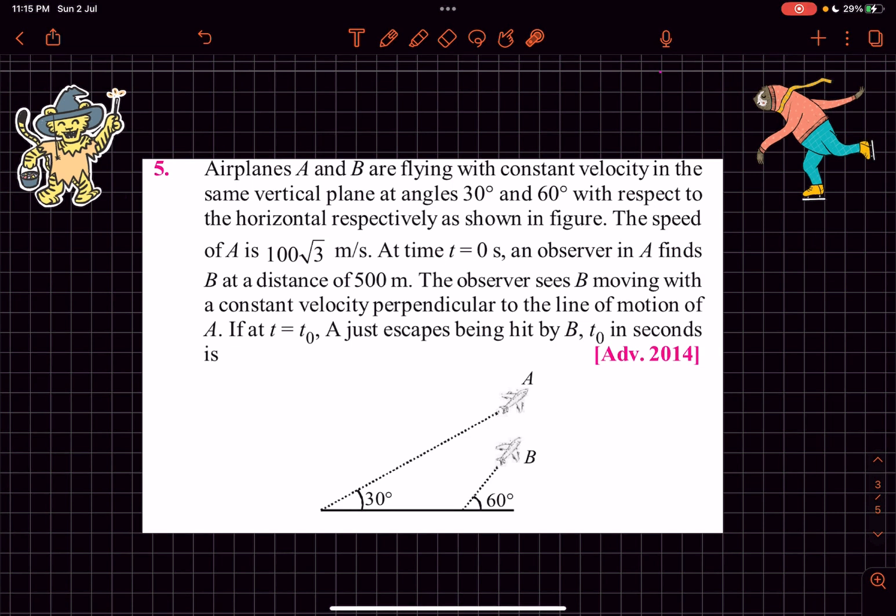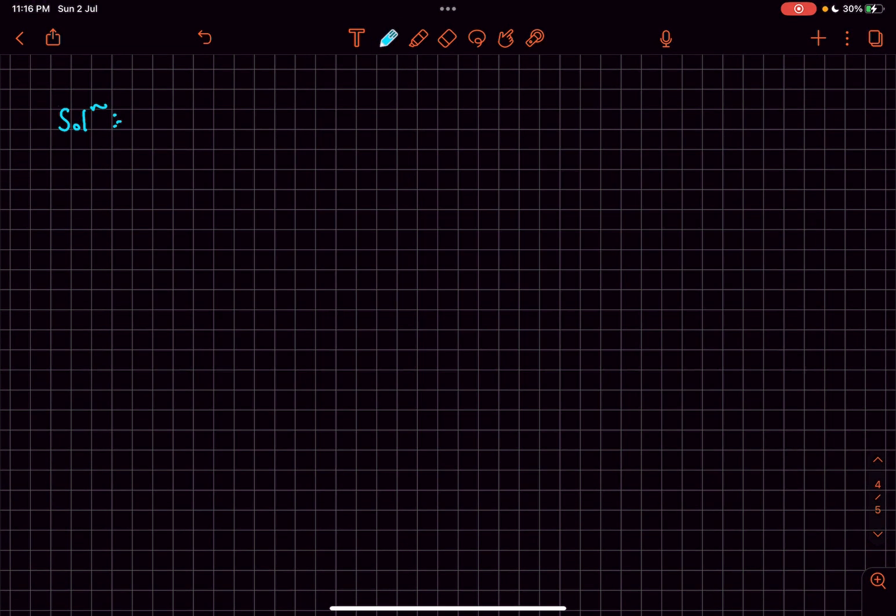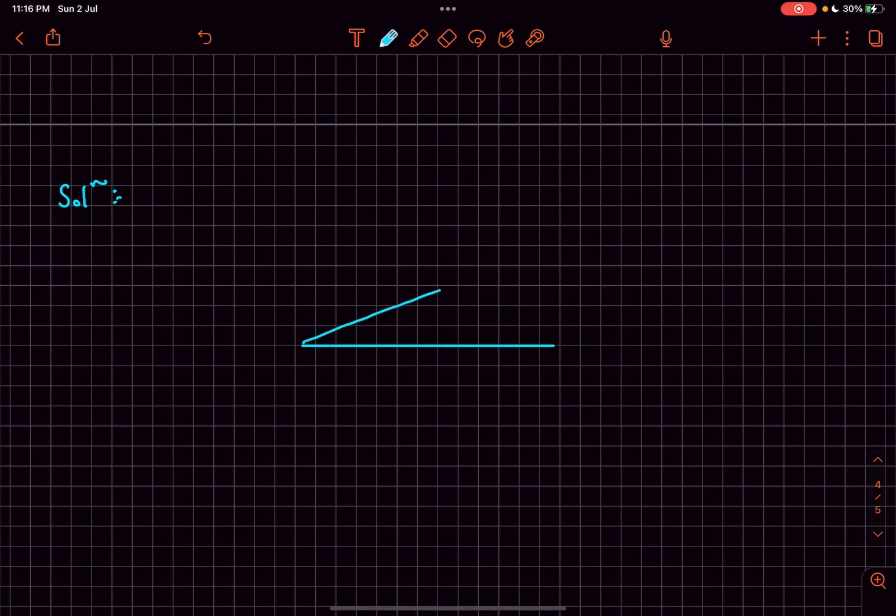Now let's move on to the solution. Let's say this is the horizontal line. The velocity of A is inclined to it at an angle of 30 degrees, so this is going to be the velocity of A. It makes an angle of 30 degrees with the horizontal, and velocity of B makes an angle of 60 degrees with horizontal.